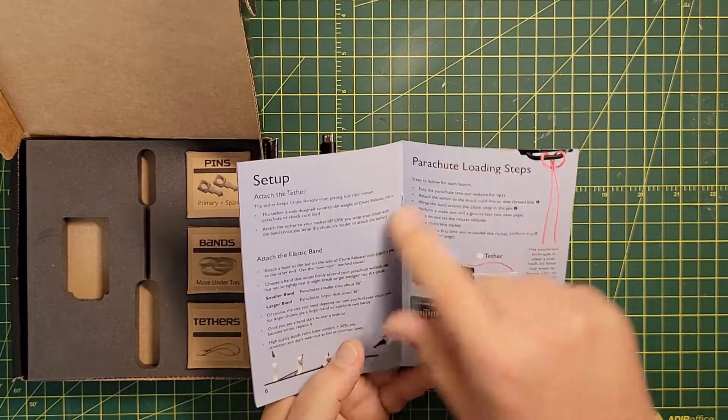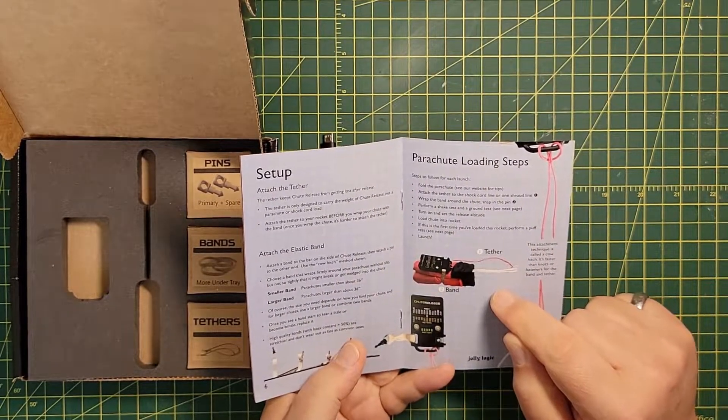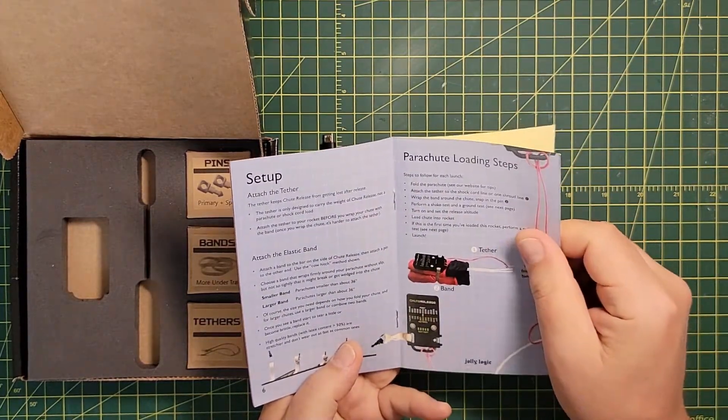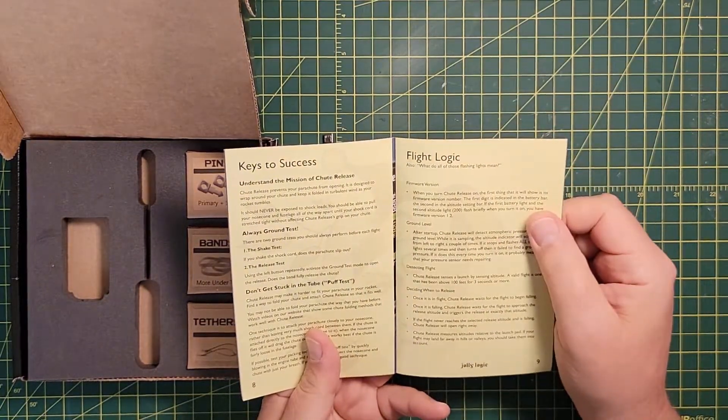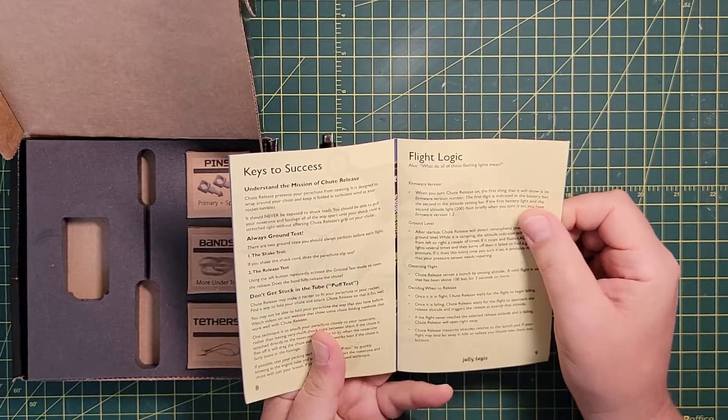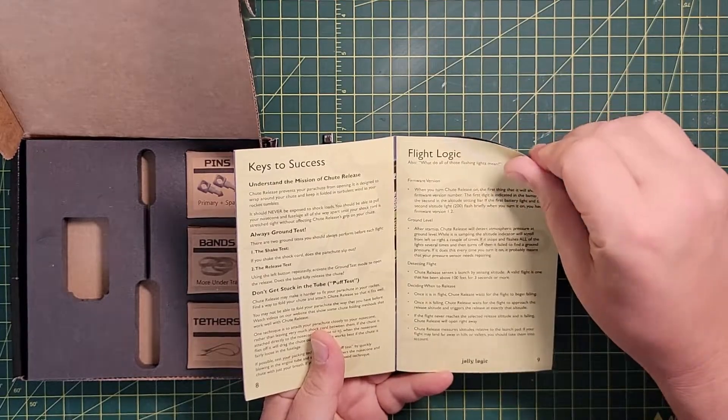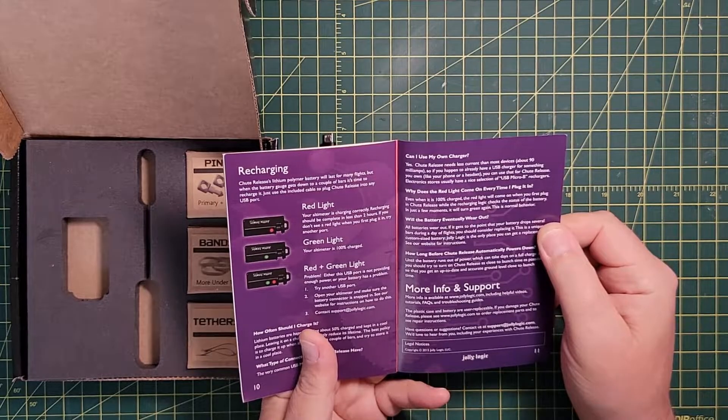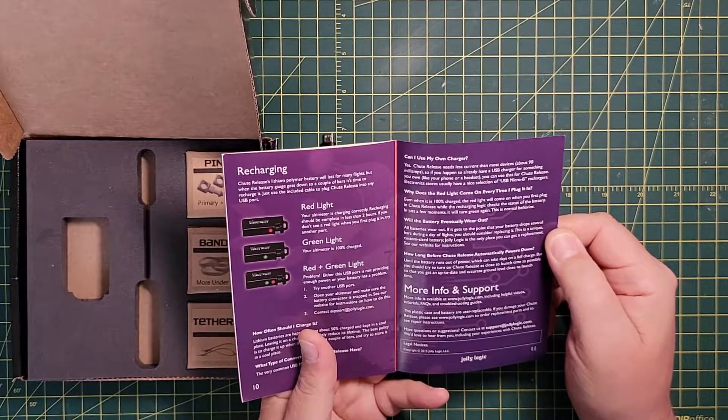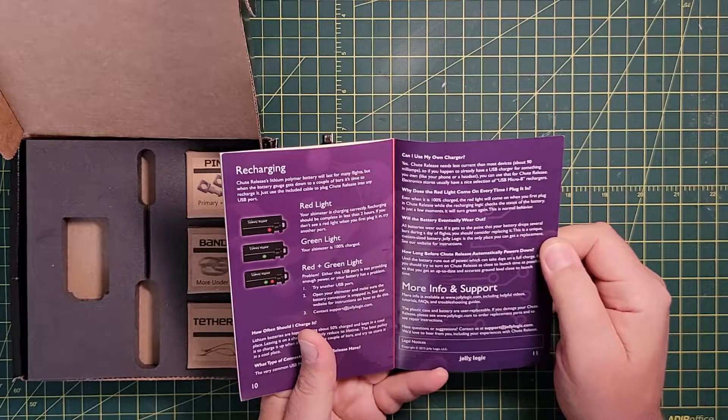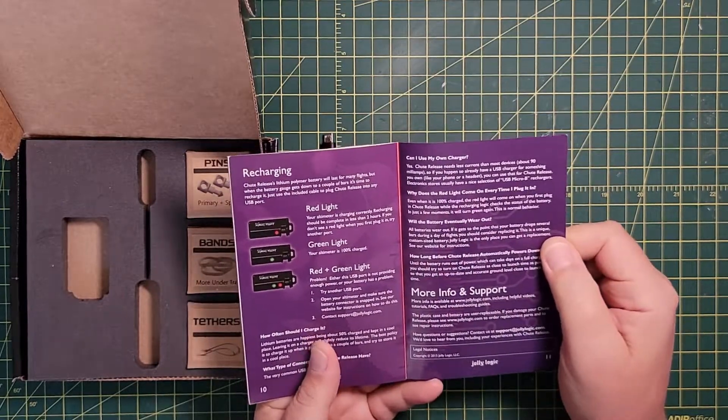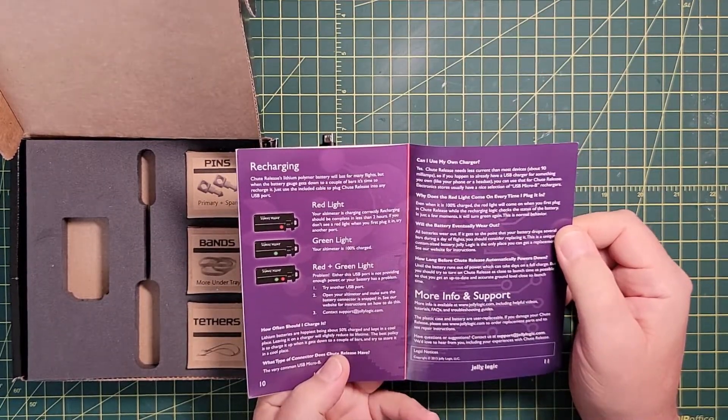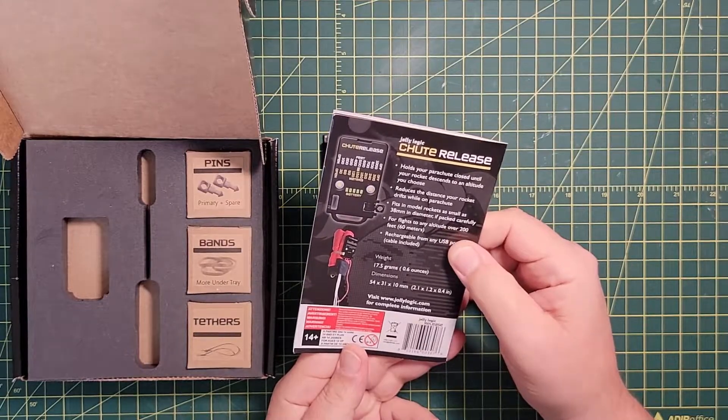Very nice manual. Walks you through the whole process of how to set it up. Recommendations, larger bands, small bands. It has a replaceable battery. You can get replacements from Jolly Logic on their website. Chargers pretty much look like any USB charger.